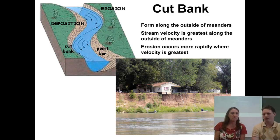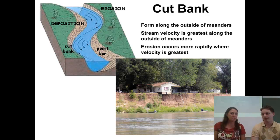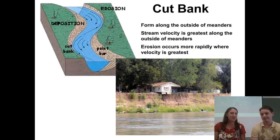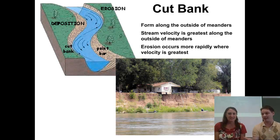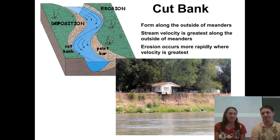In the bottom right corner, you can see a house that was apparently built on the outside of a meander and now has a cut bank underneath its foundation. It was on solid land at one point in time, but the river has scoured that side and taken that land away. So that's the cut bank.